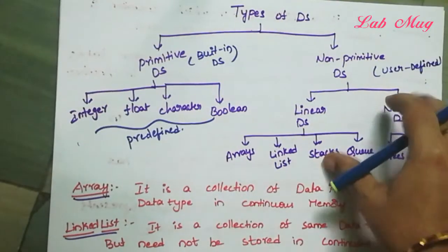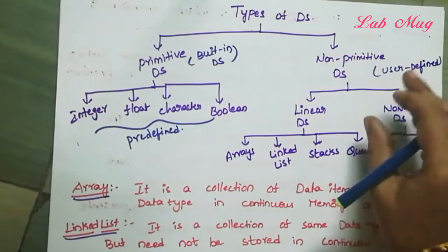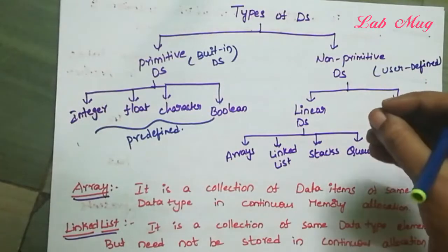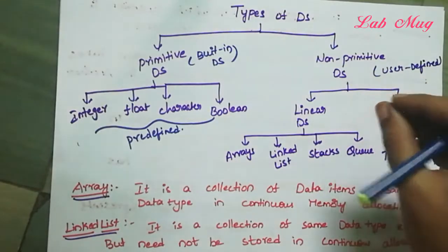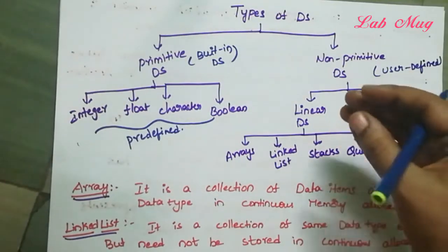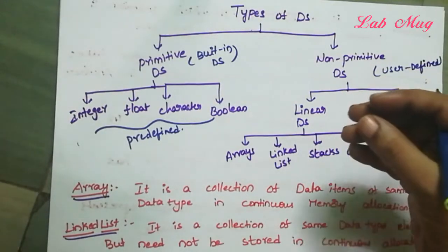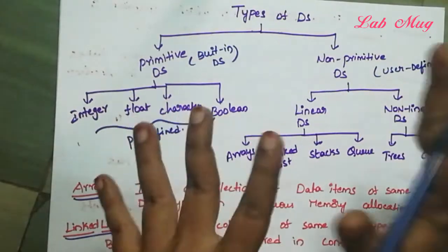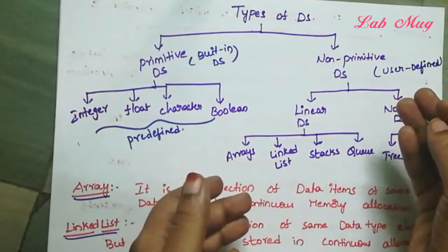Non-Primitive Data Structures are derived from primitive data structures. This non-primitive data structure is a more complicated data structure, because when we design it, we keep large data in mind — emphasizing grouping of same data items or different data items.